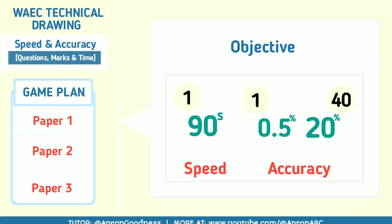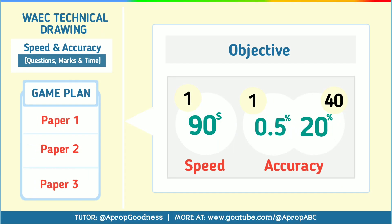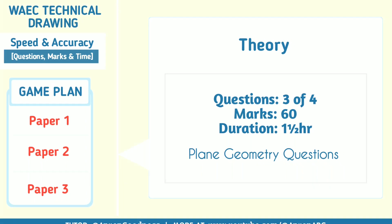On speed and accuracy for Paper 1: you must be as fast as 90 seconds per question. On accuracy, if you get one question correctly you have 0.5% of the total. For all 40 questions, that amounts to 20%. So Paper 1 is worth 20% in total.